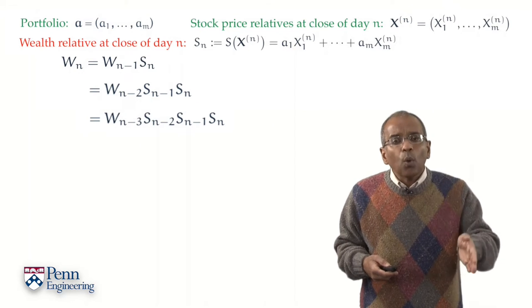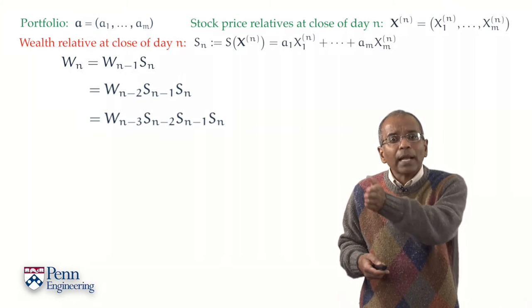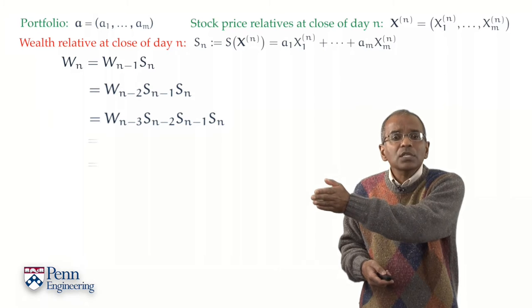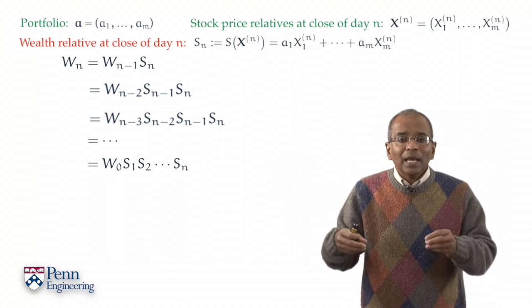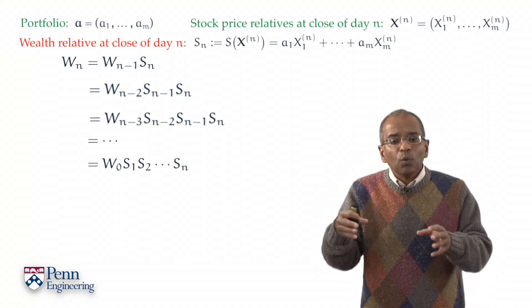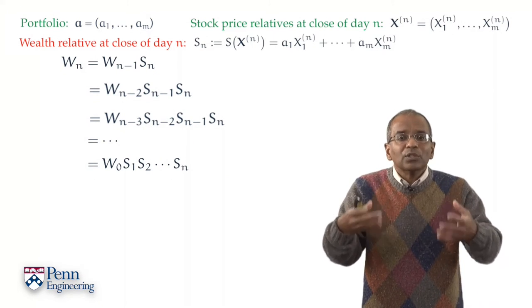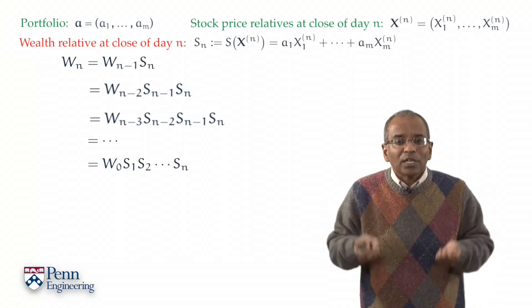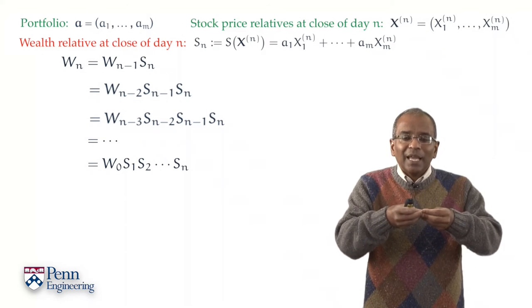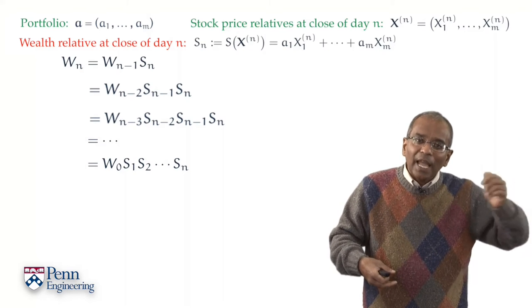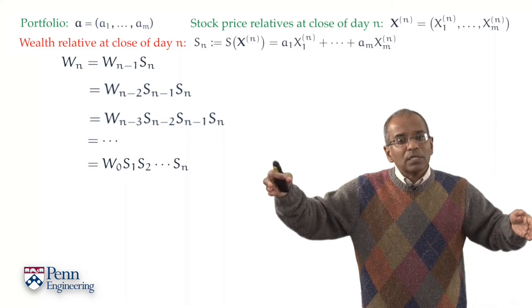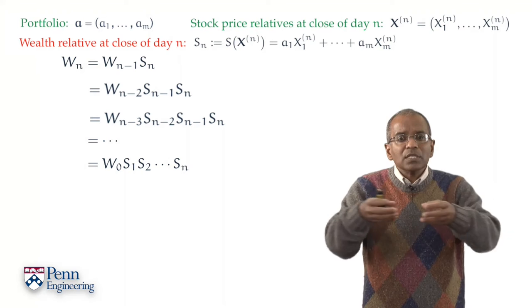We're going to inductively step through one day at a time going back into the past until we end up with day 0. And each day we go back, we incorporate one more wealth relative for that day into a product. And so at the end we relate the wealth at the end of day n to the starting wealth W_0 by a simple product.